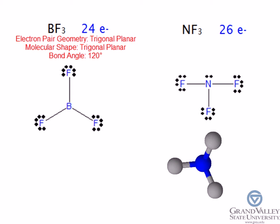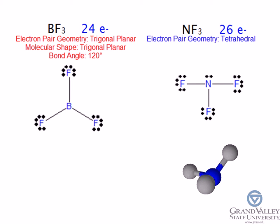Since there are four electron groups in NF₃, the electron pair geometry is tetrahedral. Seeing that there are only three atoms bonded to the central atom, the molecular shape is bent.